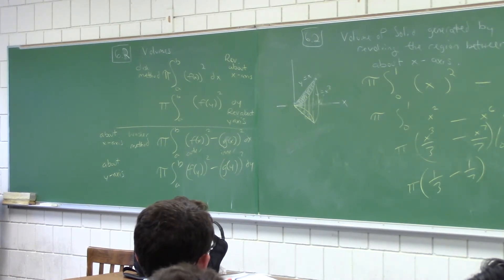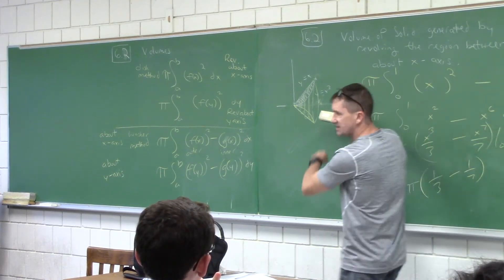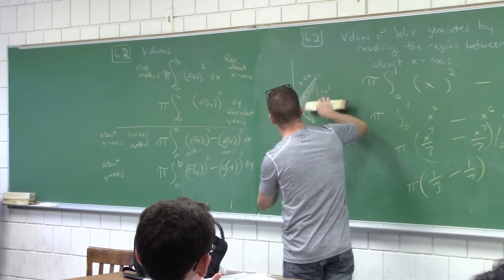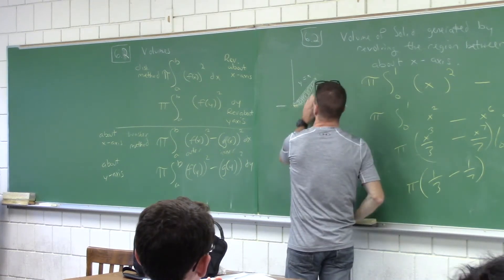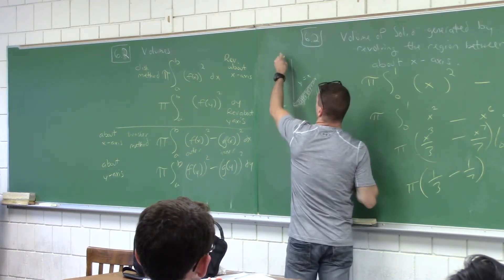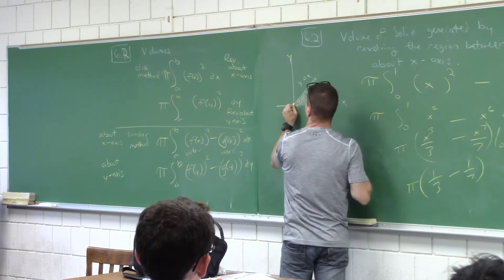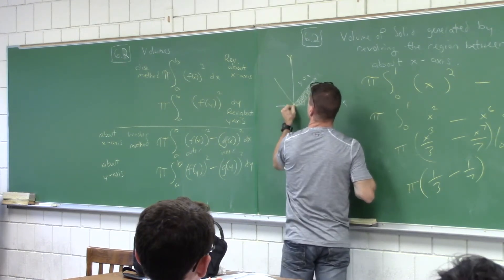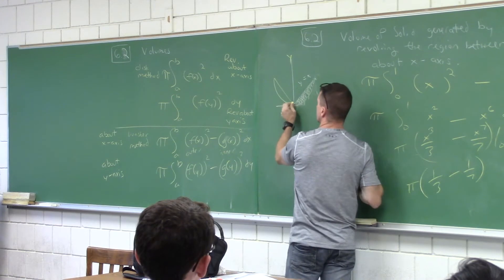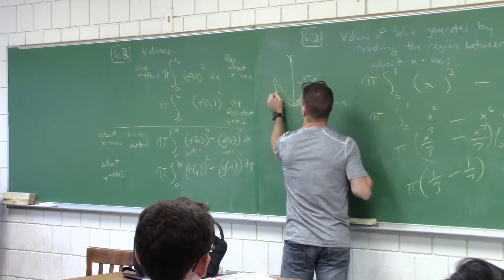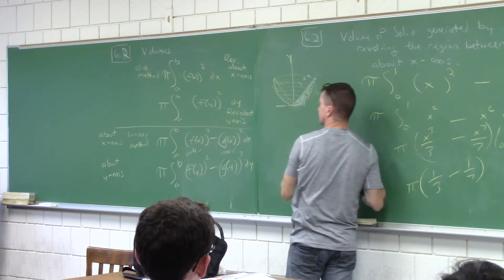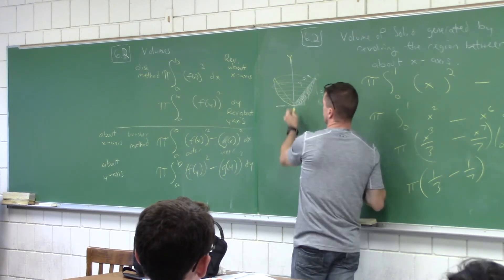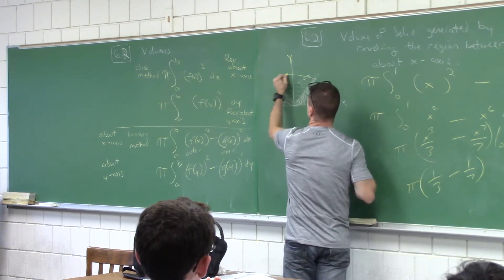We don't have to solve it, but I was wondering if you could help me set this up. I'm going to keep that same shaded region at the beginning right there. This time, you know where I want this thing revolved around? We revolve this around the y-axis — that same region. Making a bunch of circles in here.